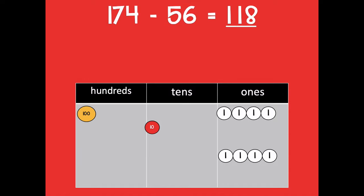Hopefully you got that one, but we're going to do another one to practice. Here's your next problem: 136 minus 57. Model this on your place value chart, do any decomposing or unbundling that you need, then solve. Click play when you're ready to go over it together.